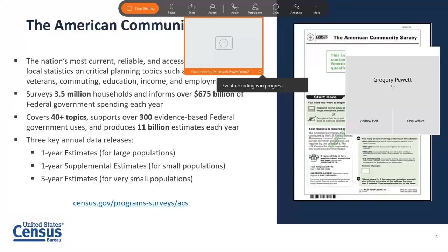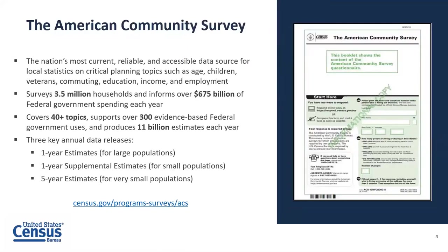My name is Billy Gamble. I work in the Outreach and Education Branch at the American Community Survey Office. I want to provide some information about the American Community Survey — commonly referred to as the ACS — and what it provides to the COVID hub. The ACS is the nation's most current, reliable, and accessible data source for statistics on critical topics. Every year, 3.5 million households are surveyed, and the ACS helps to allocate more than $675 billion of federal spending each year. There are over 40 topics covered, supporting over 300 federal government uses.